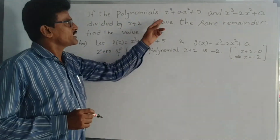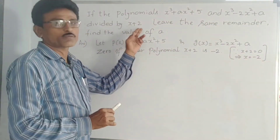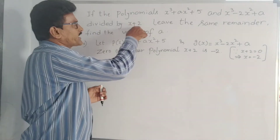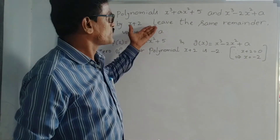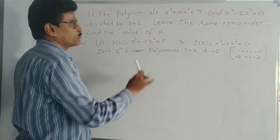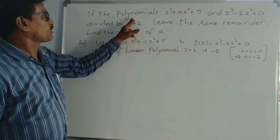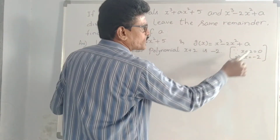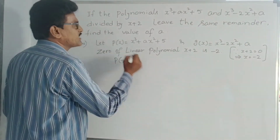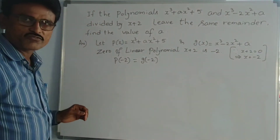Last problem: if the polynomials x cubed plus ax squared plus 5 and x cubed minus 3x squared plus a are divided by x plus 2, they leave the same remainder. Find the value of a. Let p of x equal to x cubed plus ax squared plus 5 and g of x equal to x cubed minus 3x squared plus a. Zero of linear polynomial x plus 2: put x plus 2 equal to 0, so x equal to minus 2. Then p of minus 2 equal to g of minus 2 is the given condition.